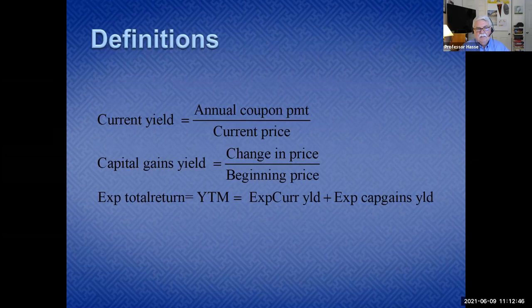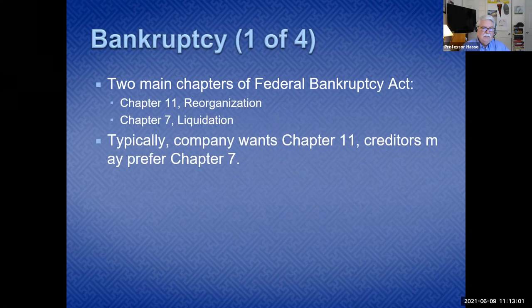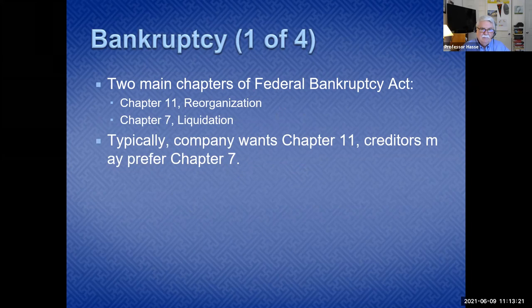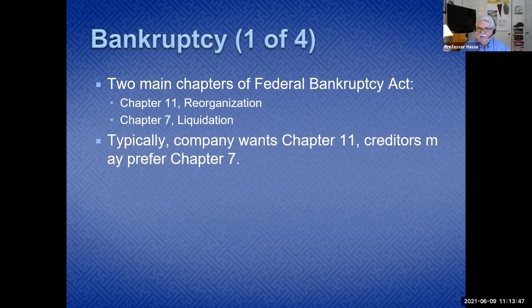Key definitions of bonds include current yield, capital gains yield, and expected total return. One thing to watch out for when a company has a lot of debt is bankruptcy. There are two main chapters of the Federal Bankruptcy Act. Chapter 11 gives the company the ability to reorganize — it's like a timeout where the court tells creditors to give the company time to fix things and you'll get your money. Chapter 7 is liquidation — time to sell off assets and pay off creditors. Most companies choose Chapter 11 because it gives them a chance to reorganize.